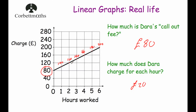Another way to find this is to work out the gradient of the line. The gradient is the rate of change — it shows how the charge changes for every one unit you move across the horizontal axis. Choosing two points, say one hour and six hours, we can use rise over run (or y2 minus y1 over x2 minus x1). The run is 5 hours, and the rise is from £100 to £200, so £100. Rise over run gives 100 divided by 5 equals 20. So the gradient is 20. The y-intercept represents his call-out fee, and the gradient represents his hourly rate of £20 per hour.